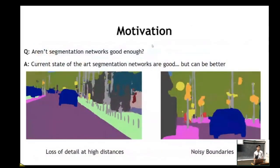A lot of people actually ask me when I'm working on this problem, aren't segmentation networks already good enough? So the answer to that is that existing segmentation networks are definitely good, but they can definitely also be better. The two main categories of failure cases that we will focus on is loss of detail at high distances and also noisy boundaries.